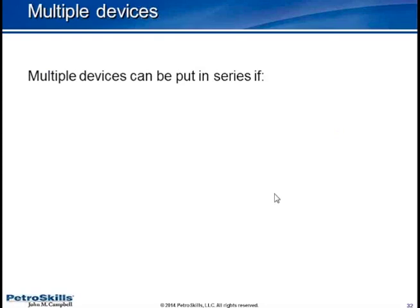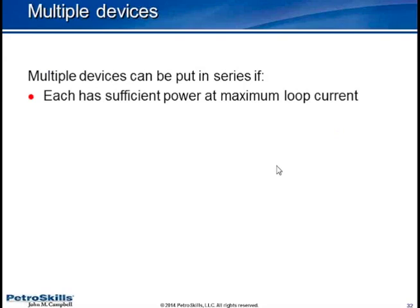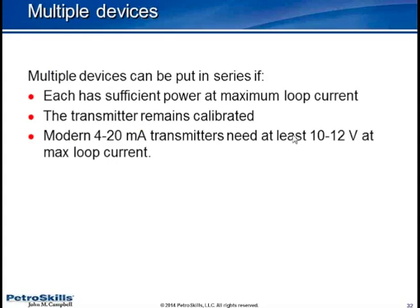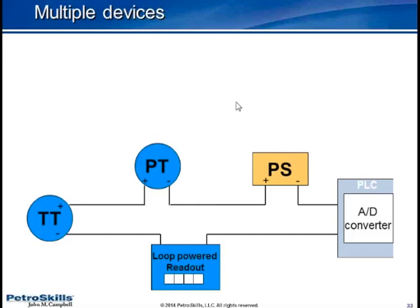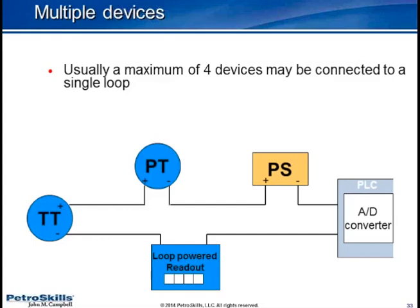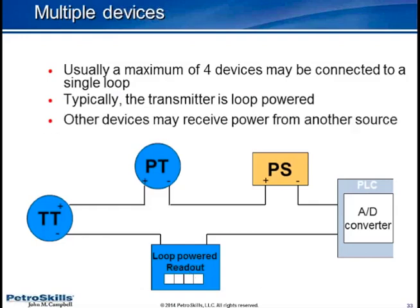I could put multiple devices in series if each has sufficient power at maximum loop current. The transmitter remains calibrated, bearing in mind that a 4 to 20 milliamp transmitter needs at least 10 to 12 volts at maximum loop current. What do you think of that? Do you think that works? Usually I can have up to four devices connected. But I cannot have two transmitters in the same system. You can only have one transmitter.